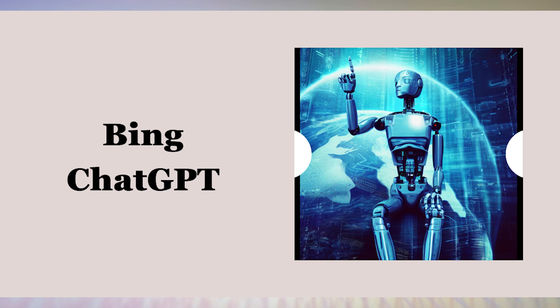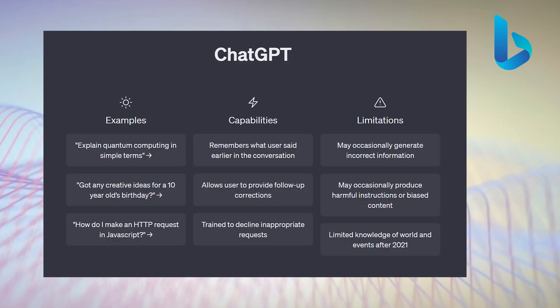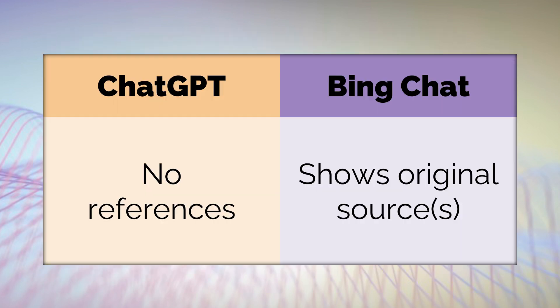Let's learn Bing Chat, which uses ChatGPT. The first question is: if there is already ChatGPT, why should I use Bing Chat? The reason is Bing Chat gives you references. It doesn't just answer your questions — it tells you where it found the answers. So there is a lineage, a connection, a reference.